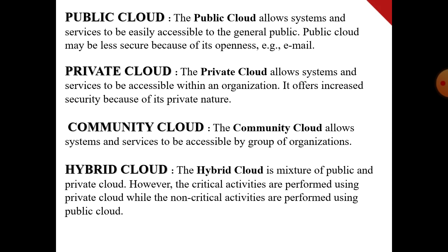Public Cloud: The public cloud allows systems and services to be easily accessible to the general public. Public cloud may be less secure. Private Cloud: The private cloud allows systems and services to be accessible within an organization, offering increased security because of its private nature. Community Cloud: The community cloud allows systems and services to be accessible by groups or organizations. Hybrid Cloud: The hybrid cloud is a mixture of public and private cloud. Critical activities are performed using private cloud, while non-critical activities use public cloud.